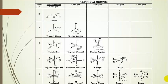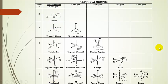Here's our table of geometries. The first column is the steric number, ranging from two through six. Here's the central atom with two things attached — steric number two — and there is only one geometry for steric number two. With no lone pairs, all of these are the basic geometry for a given steric number.